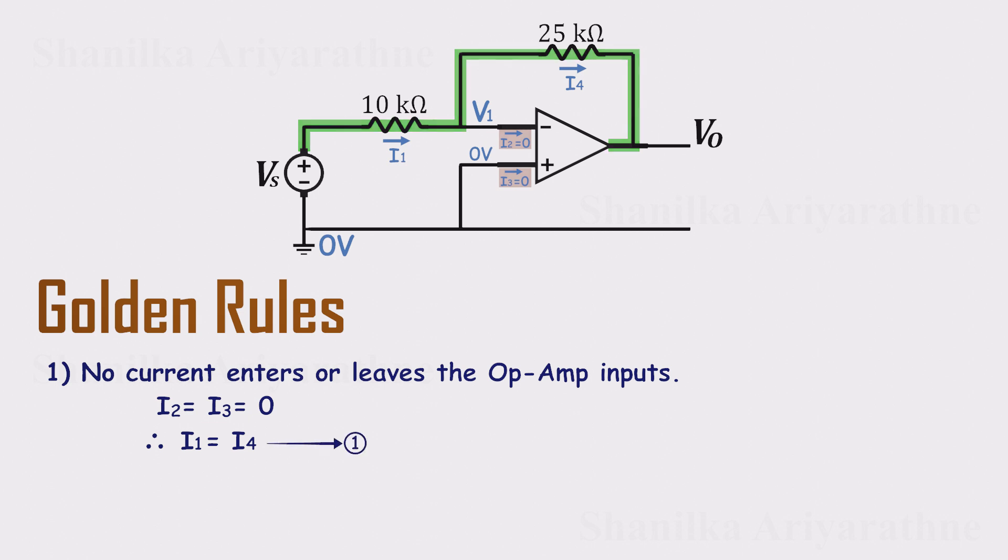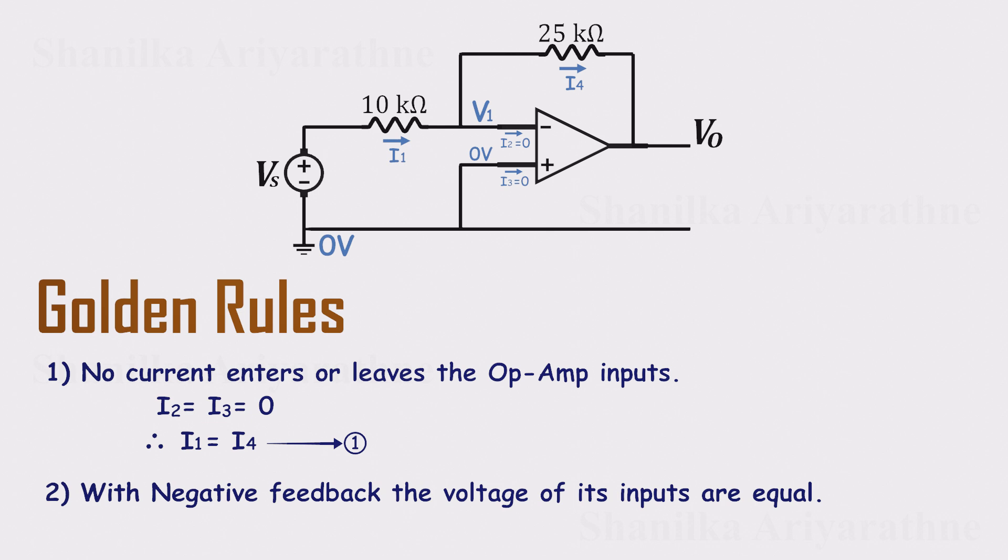Golden rule 2: With negative feedback, the op-amp will adjust its output so that the inverting and non-inverting inputs sit at the same voltage. Since the non-inverting input is grounded, both inputs are effectively at 0 volts.